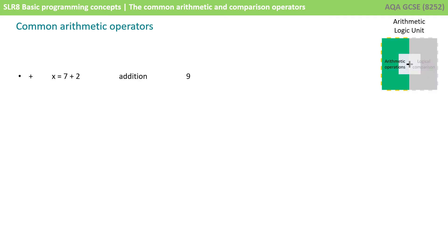We'll start with the common arithmetic operators. There are ones you'll be very familiar with from maths. There's the plus symbol, for example, x equals 7 plus 2, that's addition. There's the minus or subtraction operator, x equals 7 minus 2. There's the multiplication operator. Notice here we use the star or asterisk symbol and not the letter x on the keyboard. So, x equals 7 times 2.